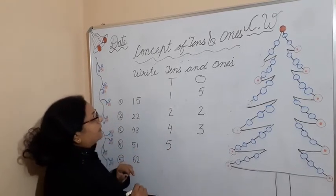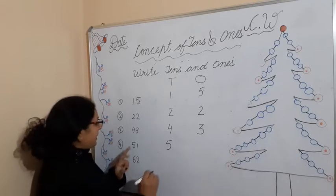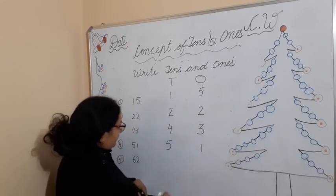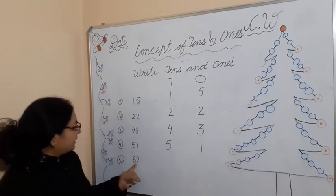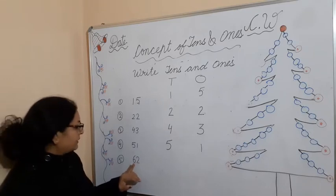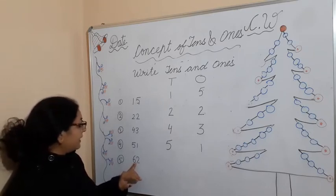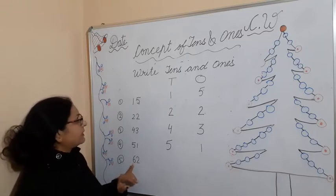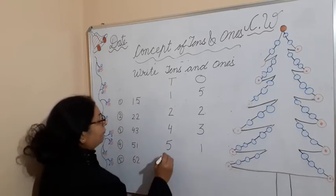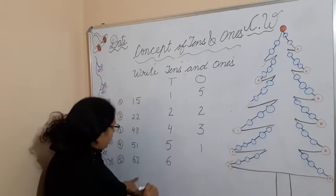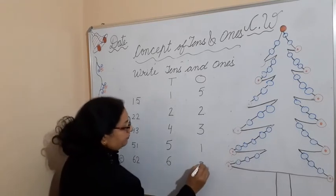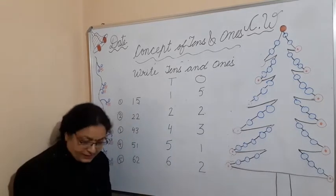The next number has five tens and one one — write five under the heading of tens and one under the heading of ones. Then sixty-two: six tens and two ones, so write six under tens and two under ones.